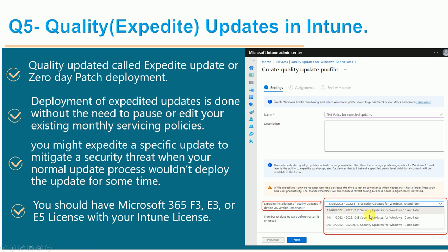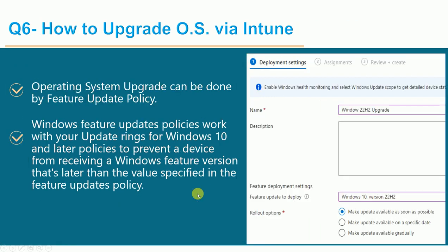To use quality updates, you need a Microsoft 365 F5, E3, or E5 license in addition to your Intune license. If you have Microsoft 365 E5, the EMS E3 or E5 license is not separately required because Microsoft 365 E5 covers everything. Once licensed, you can select your patches and deploy them as a zero-day patch.